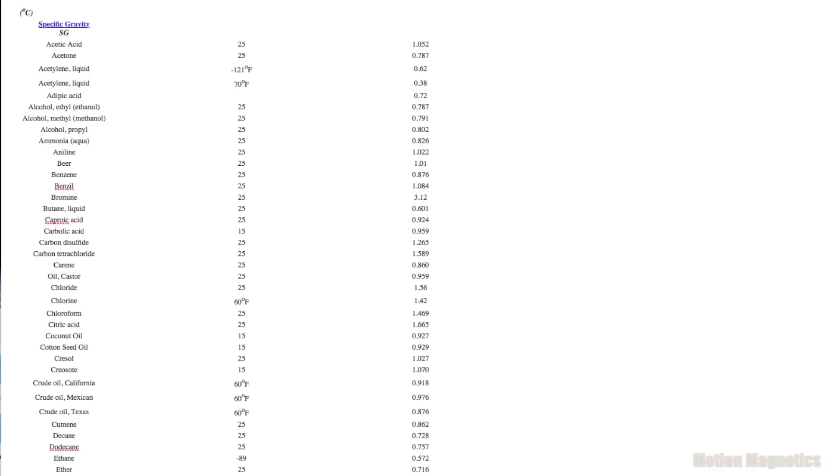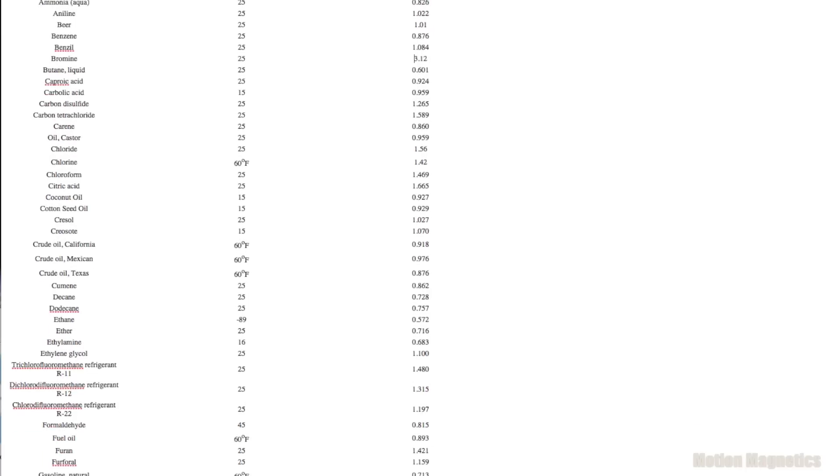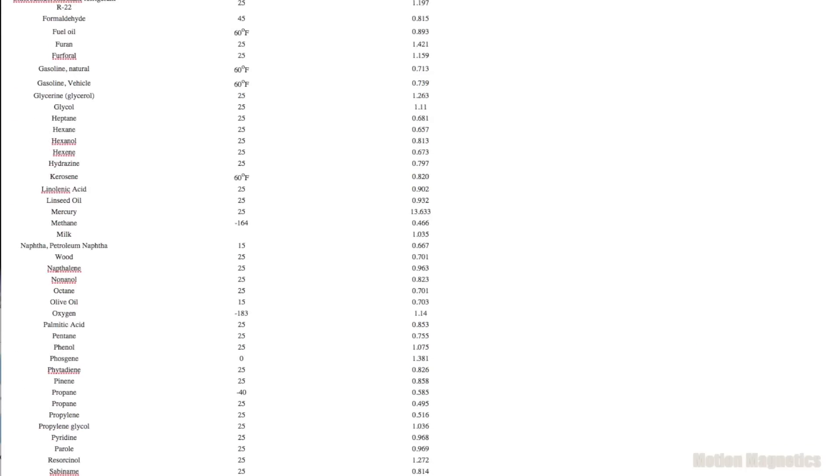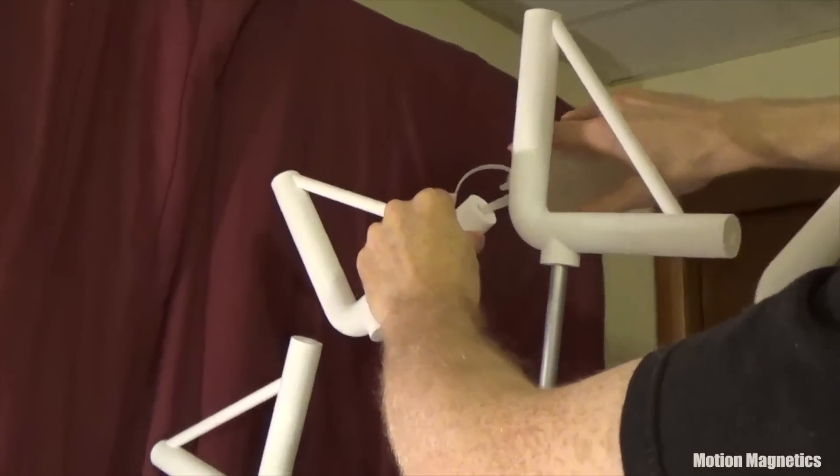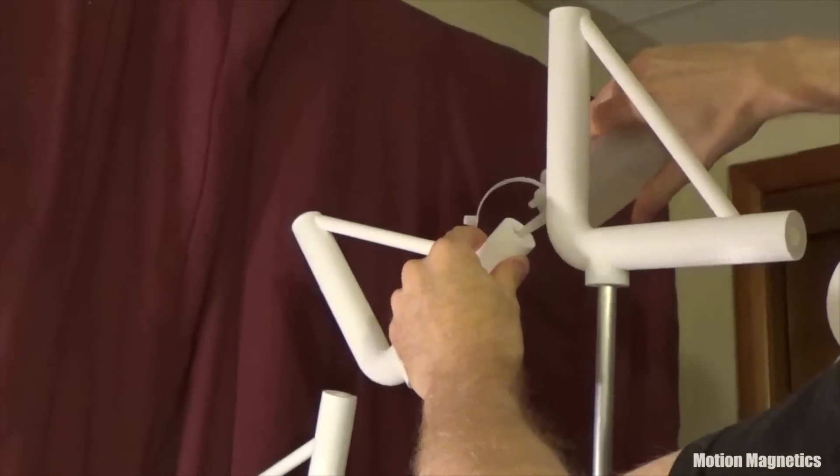I looked at different liquids that could be used for the system. Mercury is one of the heaviest liquids you could use. It's more than 13 times as heavy as water, but it's also toxic. Because of that, I disqualified it from consideration. I'd much rather work with things that are non-toxic. In the long run, I ended up using water.